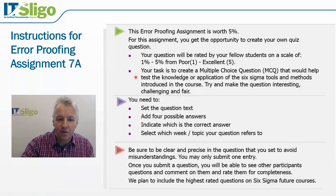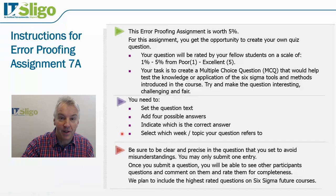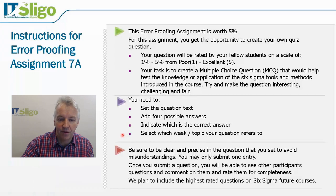You'll be asked to do four things: set the question text, add four possible answers — three of these are called distractors in multiple choice and shouldn't be completely wrong, because the quiz is to choose the most correct answer. You then indicate which is the actual correct answer, and identify which week or topic — lecture one through six — your question refers to. You're only allowed to do this once.